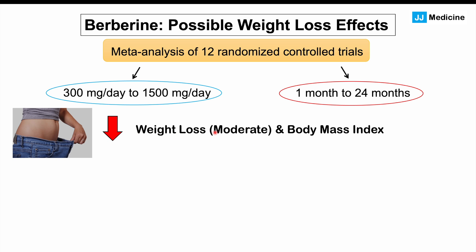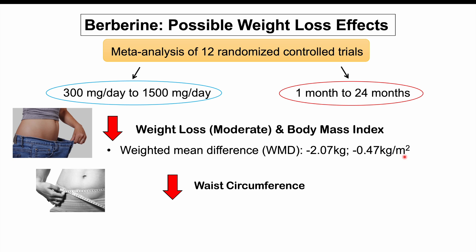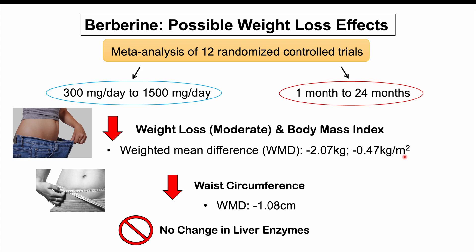When researchers weighted all findings from the 12 randomized control trials, they found significant — classified as moderate — weight loss and a reduction in body mass index. The weighted mean difference showed patients lost approximately 2.07 kilograms, roughly 4.5 pounds, and a BMI reduction of 0.47 kg/m². Patients also had a reduction in waist circumference of 1.08 centimeters on average. These trials also looked at liver enzymes, since many patients had non-alcoholic fatty liver disease, but found no significant change in liver enzymes.